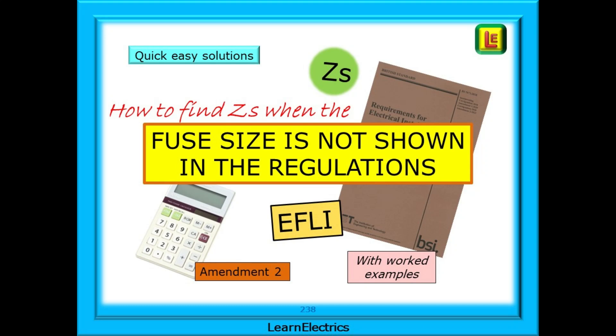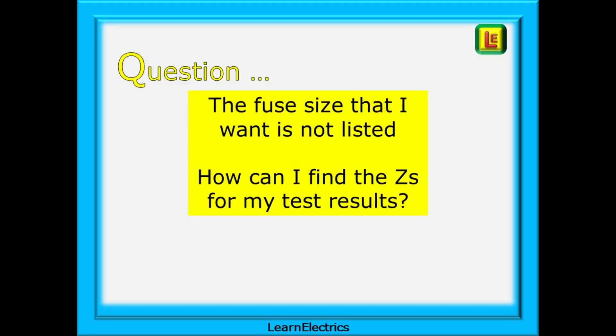In this LearnElectrics video, we'll look at how to find a ZS value when the fuse size that you need for the disconnection time that you need is not shown in the regulations book. In this video, we'll make reference to the Amendment 2 wiring regulations book, the Brown book. A question that is often asked on social media: the fuse size that I want is not listed. How can I find the ZS for my test results?